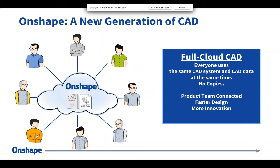Everyone is always on the same CAD system and always using the same CAD data. Because Onshape itself runs in the cloud, there's only one version of Onshape. Because the data is also stored in the cloud, there's only one version of the data, and everyone accesses the same CAD data at the same time — there are never any copies.